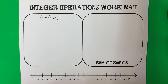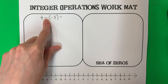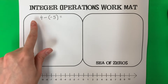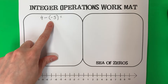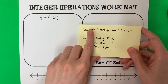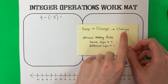Hello, in this video we are going to be talking about how to subtract integers. So I have a minus in the middle. Here's our first example: 4 minus negative 5. Now the rule to this is you need to do keep, change, change.